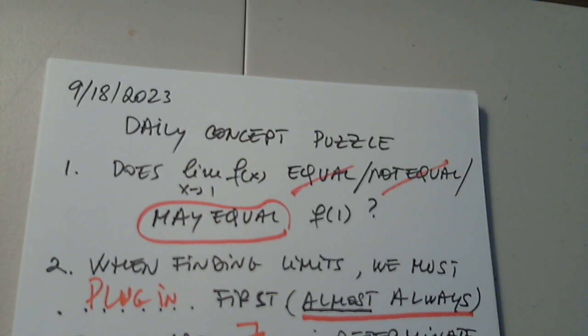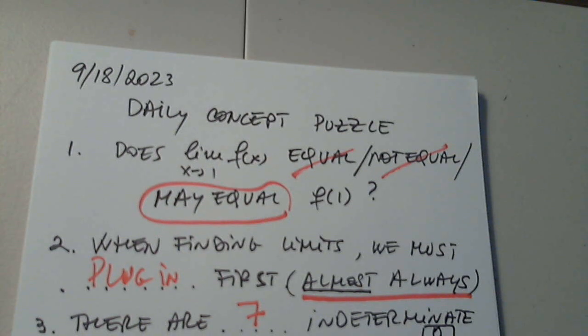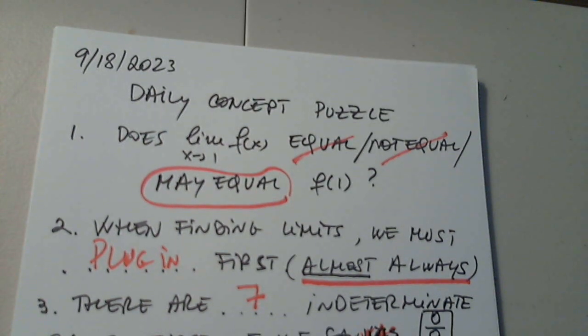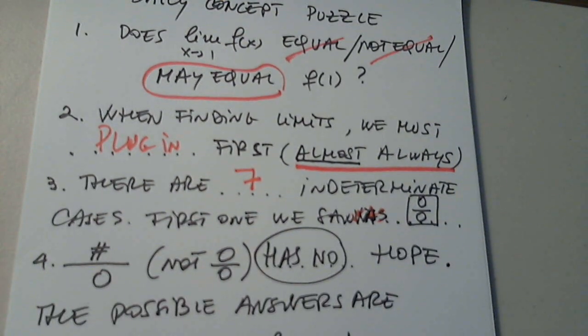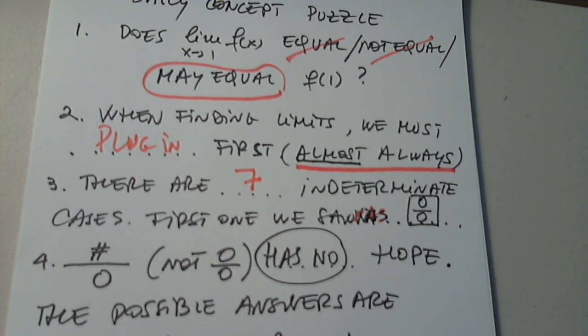A number over zero, not zero over zero. Does that mean there's no hope? Has no hope. Thank you very much for the limit to exist. In this case, the possible answers are negative infinity, positive infinity, hanging out for the beginning. Thank you very much.